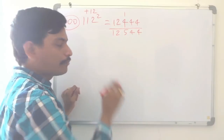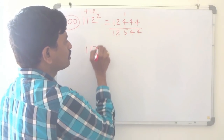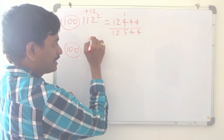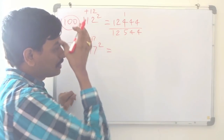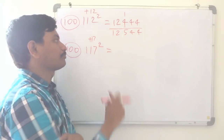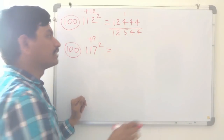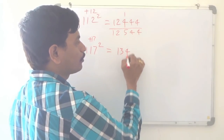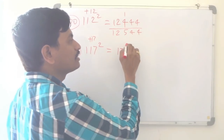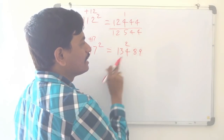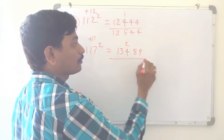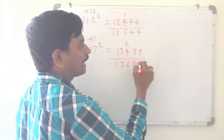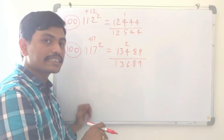I will take another example: 117 squared, which is also nearer to 100. 117 is how much bigger than 100? Plus 17. We must know the square of 17, which is 289. So 117 plus 17 is 134. And 17 squared is 289; we need 2 digits, so carry the 2: 34 plus 2 is 36. So 13,689 is the square of 117.